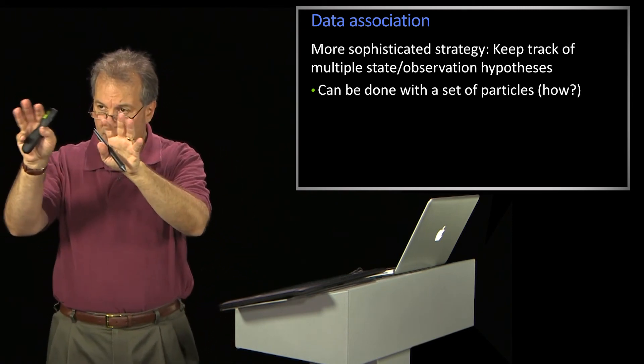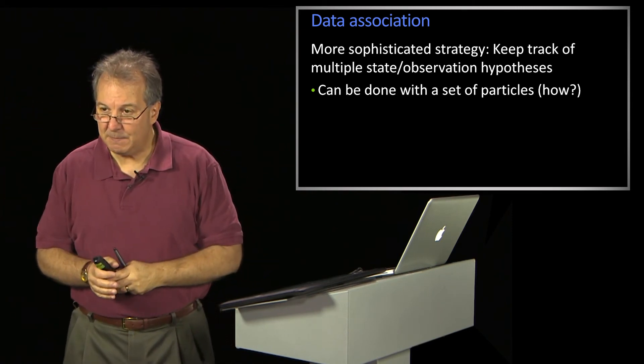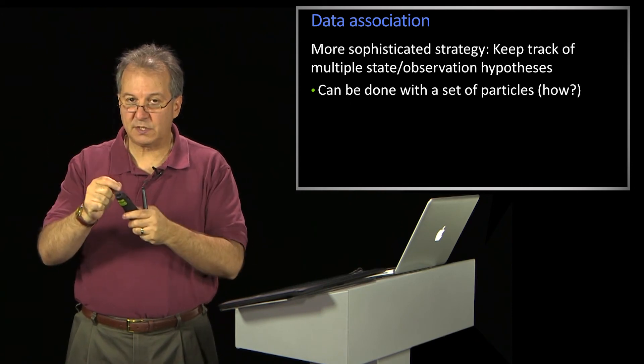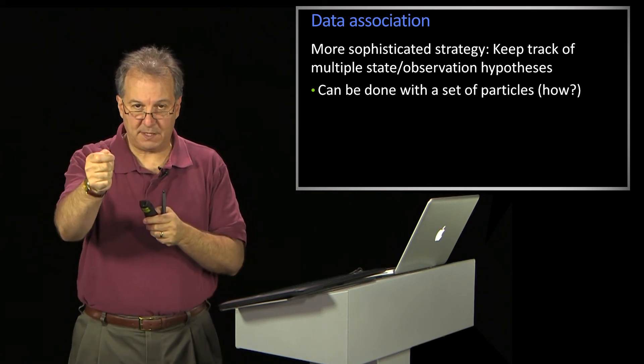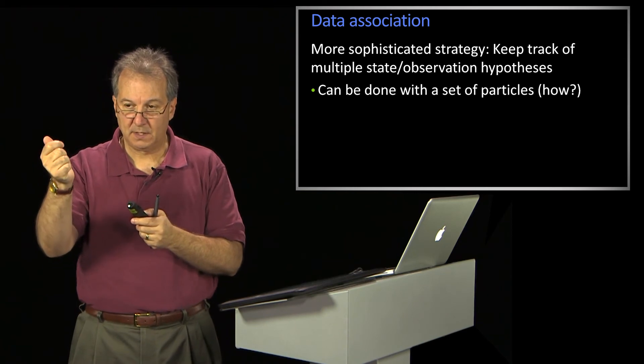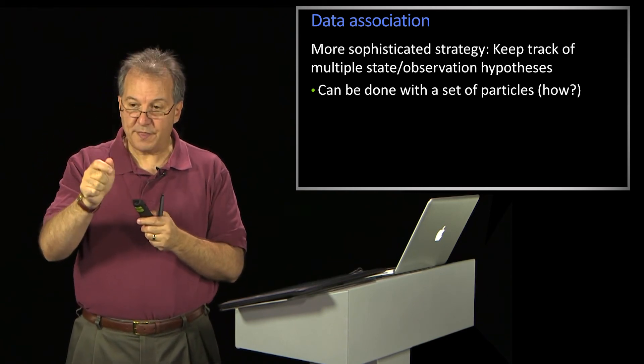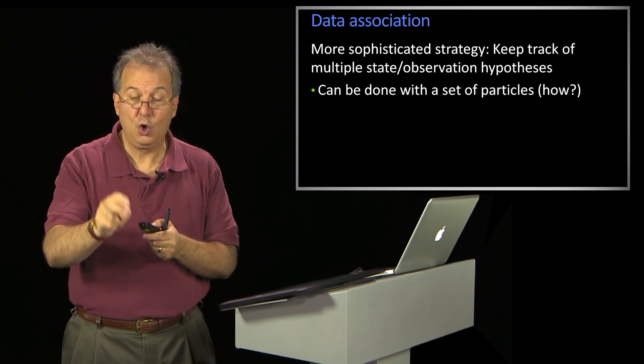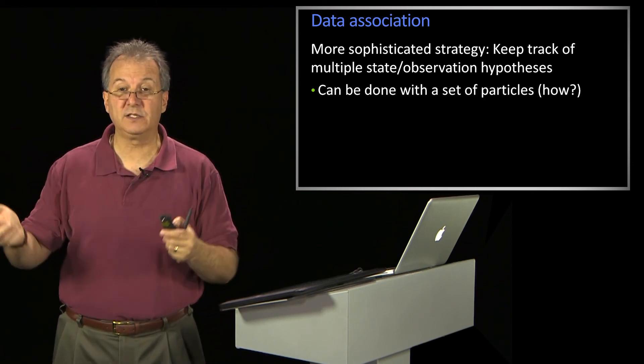So multiple hypothesis says, well, okay, I've seen two things now. And maybe it's one thing, and I should associate the real object with the left measurement, and the right one is clutter. Maybe it's one thing, and I should associate the object with the right-hand one, and the left one is clutter. Or maybe it's two things. That is, a new thing should get created.